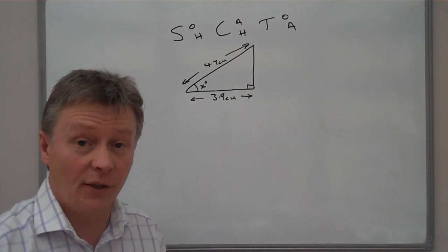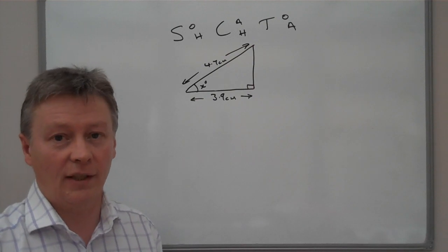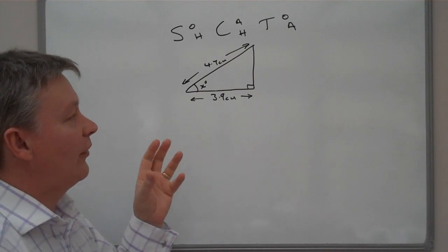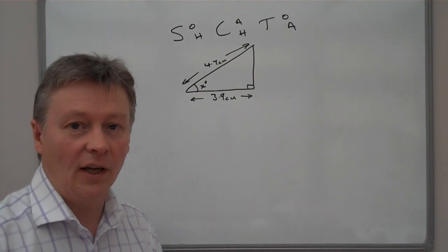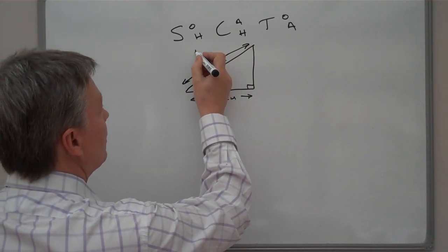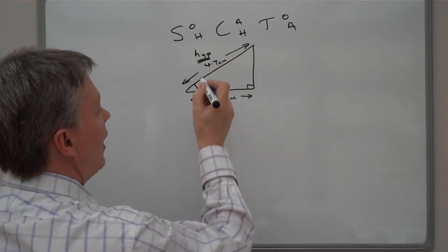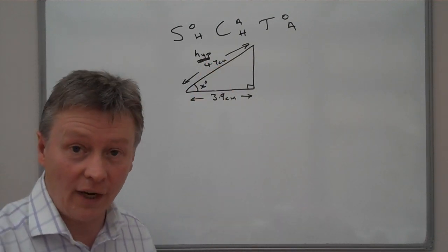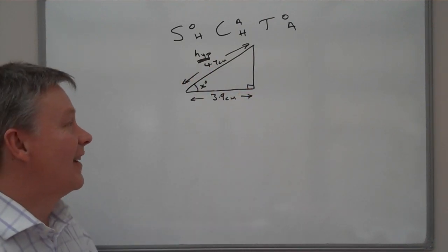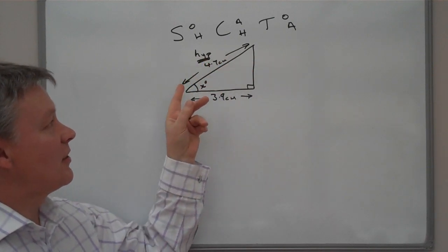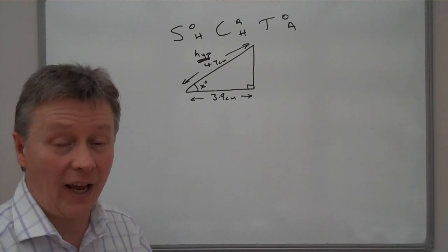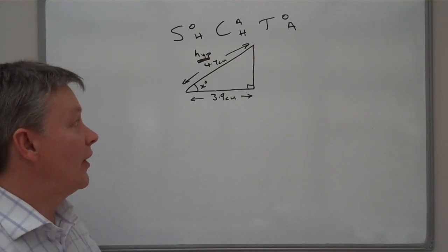When you're dealing with this kind of question you really need to start firstly by labeling the triangle correctly. The first thing is that the longest length of any right angle triangle is called the hypotenuse, so I'm going to put H-Y-P there. So hypotenuse is there, which is the 4.7 centimeters, longest side of any right angle triangle.